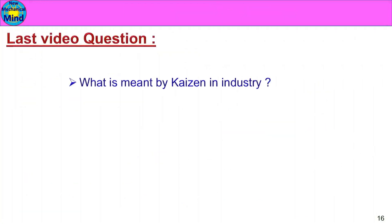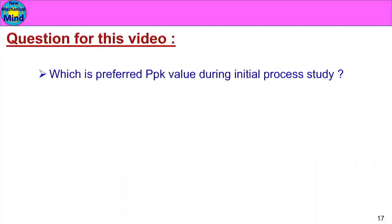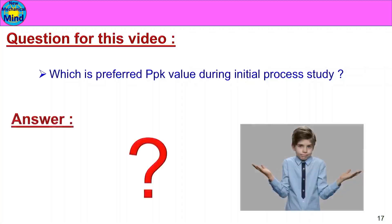Now we have a question segment. The question from the previous video was: what is meant by Kaizen in industry? The answer is continuous improvement. The question for this video is: which PPK value is preferred during an initial process study? Please comment your answer. We will meet in the next video. Thank you.